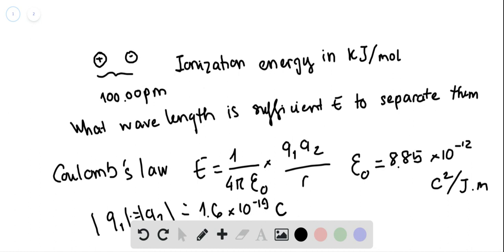Coulomb's law states that the energy sufficient to separate two charged particles is E = 1/(4πε₀) × q₁q₂/r, where r is the distance and q₁, q₂ are the charges.